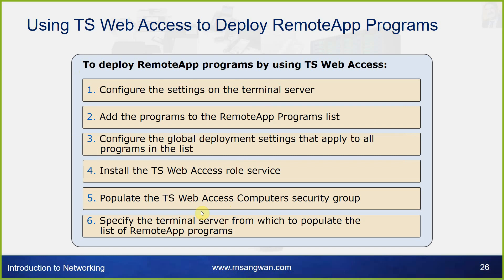To deploy remote app programs using TS web access: Step 1, configure the settings on the terminal server. Step 2, add the programs to the remote app program list. Step 3, configure the global deployment settings that apply to all programs. Step 4, install the Terminal Server Web Access role service. Step 5, populate the TS web access computers security group. Step 6, specify the terminal server from which to populate the list of remote app programs.